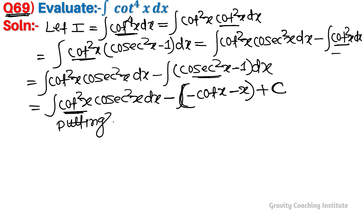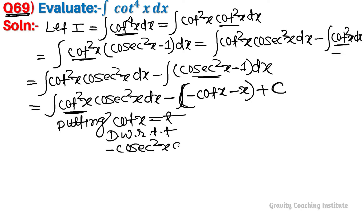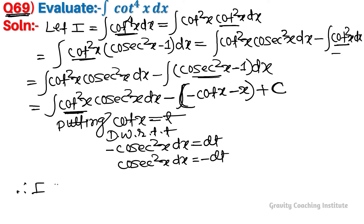Let cot x equal to t. Differentiating, cosec square x dx equals minus dt. So I equals integration of t square into minus dt, giving minus t cubed upon 3.